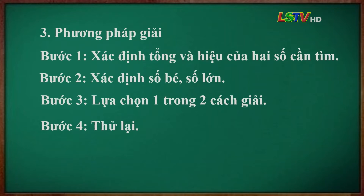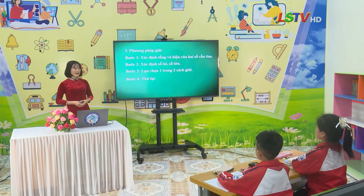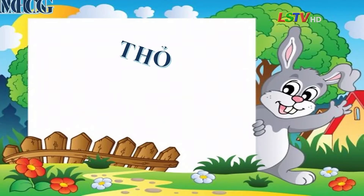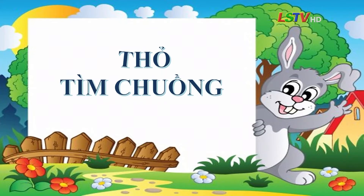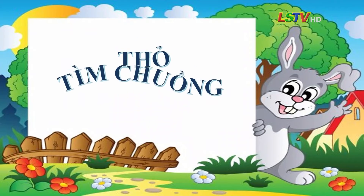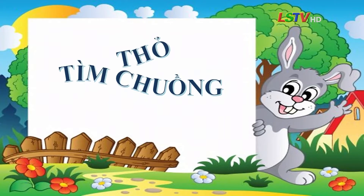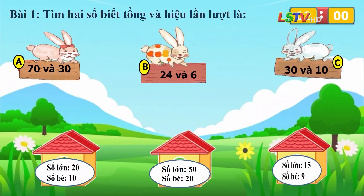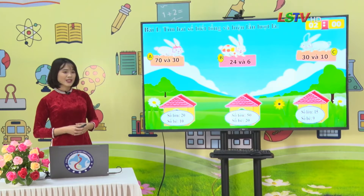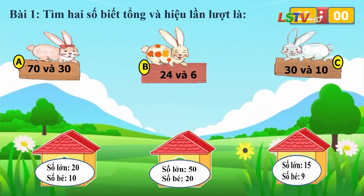Các em đã ghi nhớ công thức rồi. Bây giờ, cô cùng các em sẽ vận dụng để giải một số bài toán. Trước tiên, cô mời các em đến với bài tập số 1 qua trò chơi Thỏ tìm chuông. Mỗi chú thỏ mang 2 số là tổng và hiệu của 2 số đó. Ở mỗi chuông ghi số lớn và số bé. Các em hãy giúp các chú thỏ tìm đúng chuông của mình. Thời gian cho các em làm bài là 2 phút.